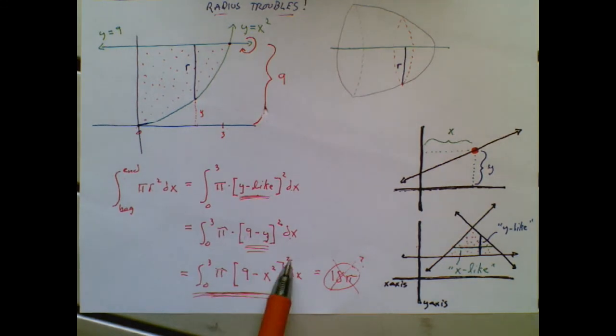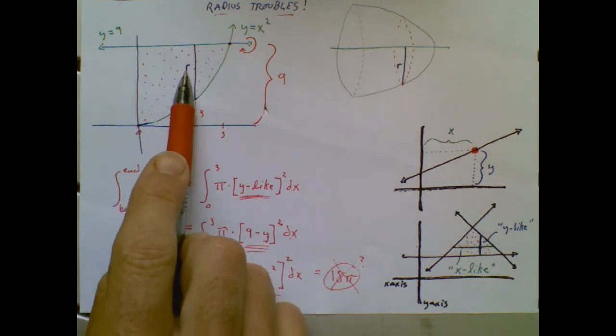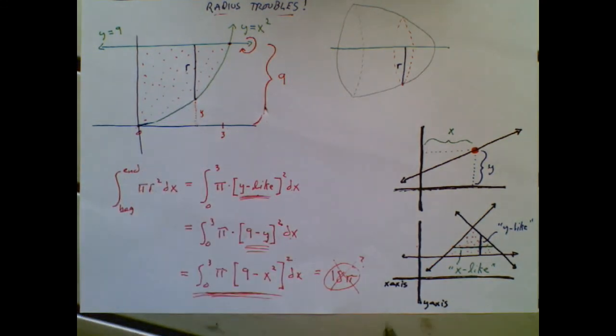The lesson to learn here is your radius isn't always going to be an x value or a y value. It might be x-like or y-like. As you can tell, the pancake method, it takes a little bit of brain power, but you know it is delicious. Catch you later.